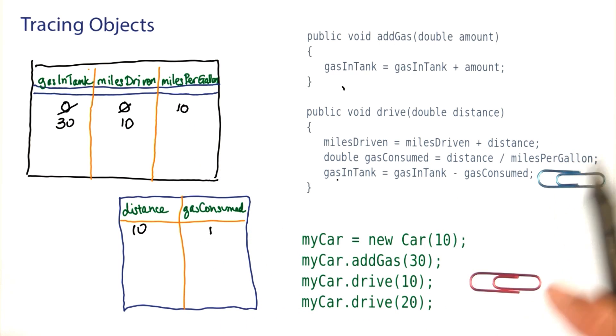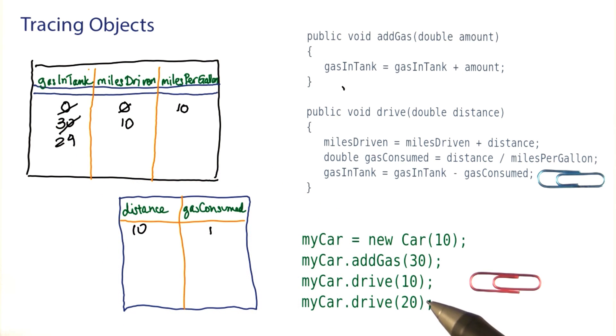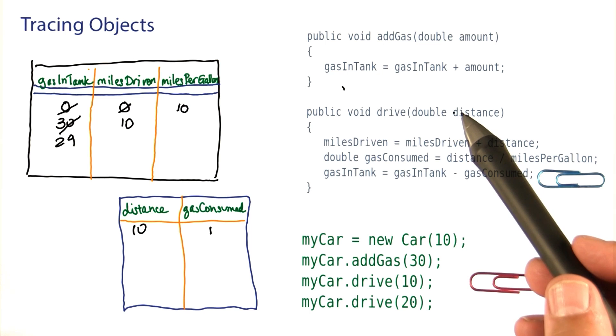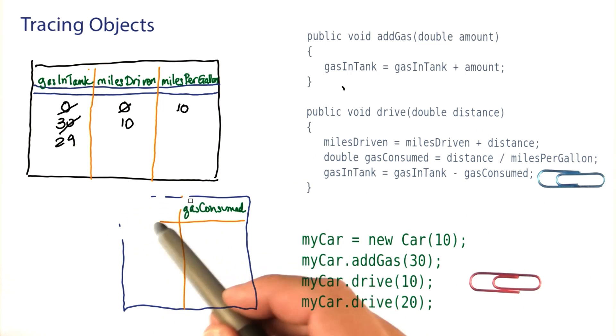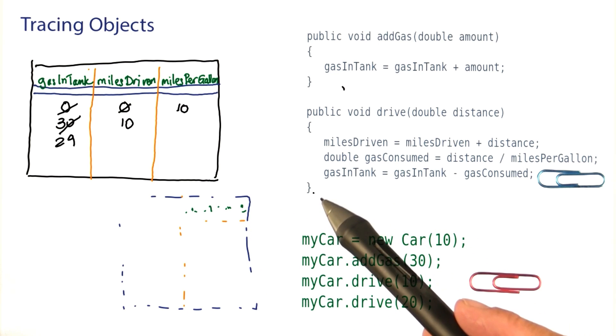Now we can look at this statement here. Gas in tank was 30. Gas consumed was 1. The difference is 29. So that should now be moved into gas in tank. Now we're at the end of this method call. And the local variable here and the parameter variable go away. So we can just crumple up our napkin here. These variables are no longer there once we exited this method.